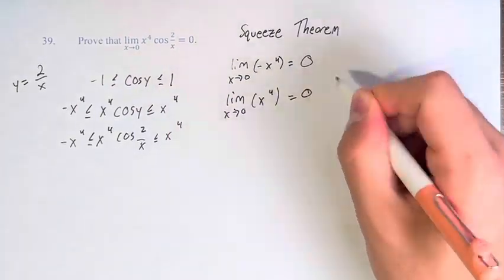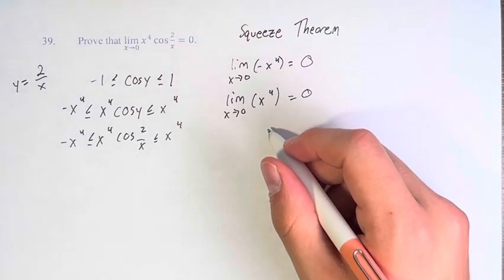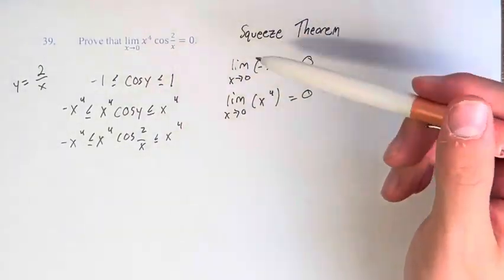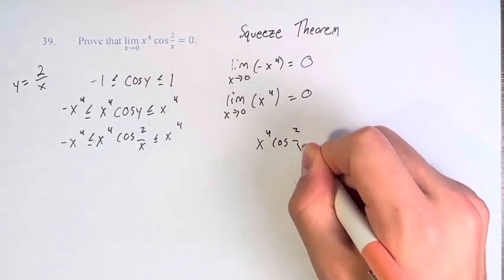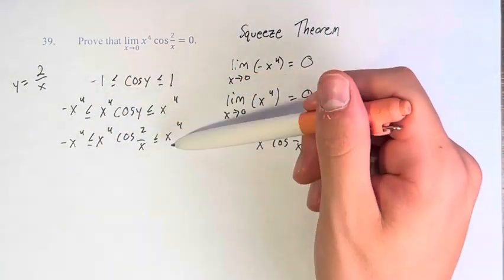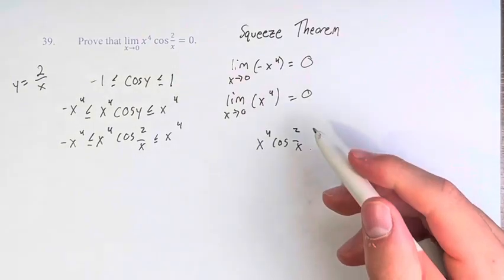Since our function x to the fourth cosine of 2 over x is less than or equal to x to the fourth and greater than or equal to negative x to the fourth,